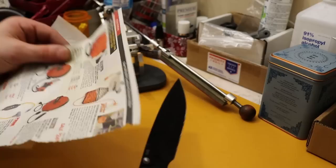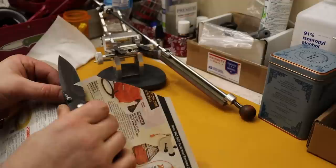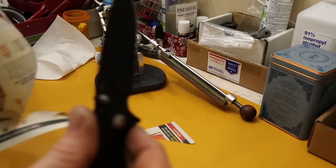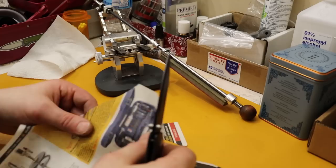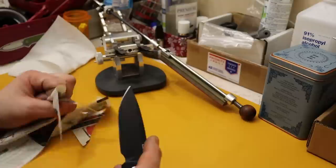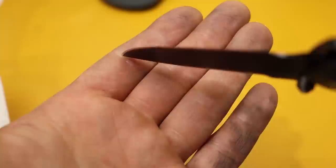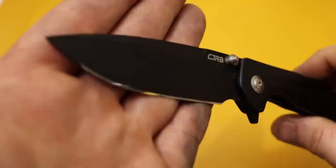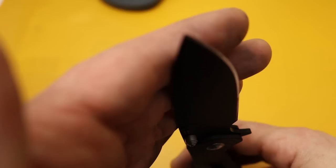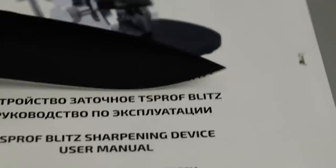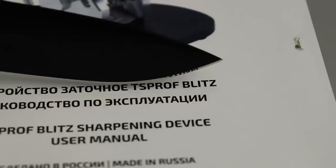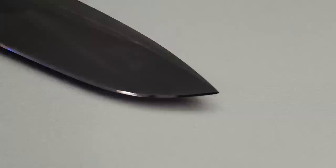All right, now let's test this edge on what is basically phone book paper. Oh yeah, very very sharp. Yes, this is incredibly sharp. Let's take a look at the edge now. Edges can be very difficult to get on camera but as you can see this is an absolute mirror edge, very beautiful.